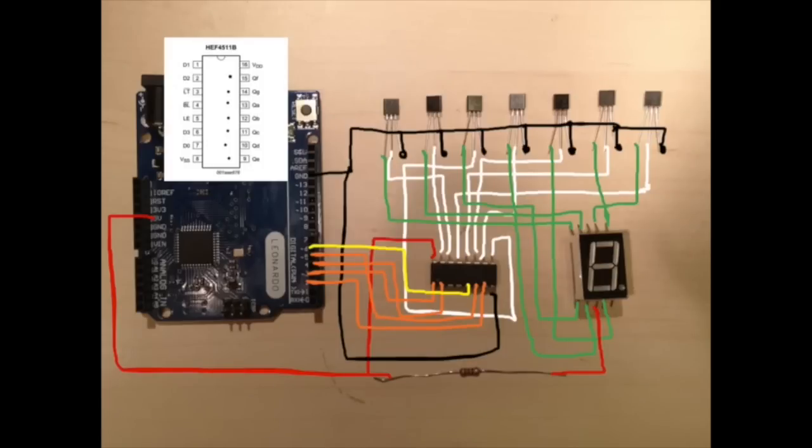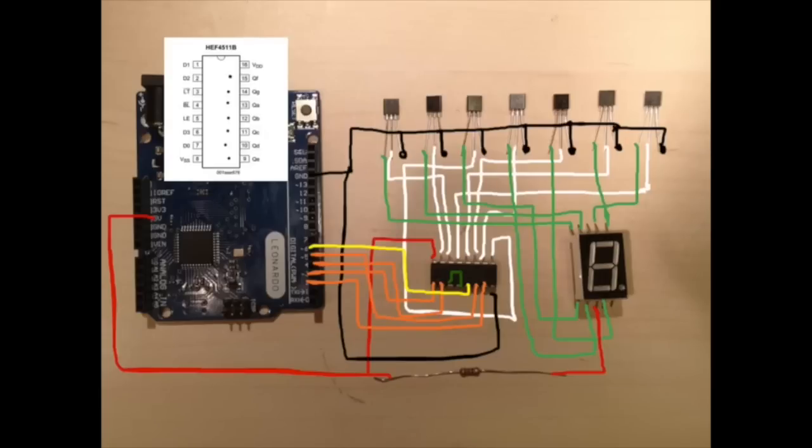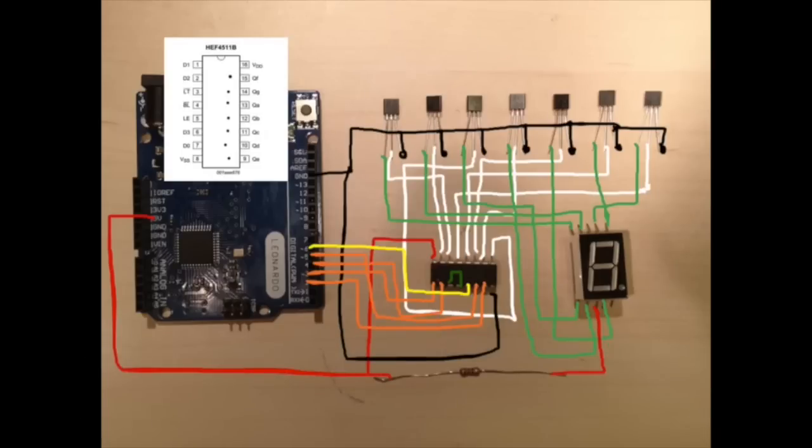One final thing, we are going to connect a cable between pin 3 and pin 4, LT and BL. By doing this, we are making sure that when the latch pin LE goes low, the Q pins always show the number represented by the four digital inputs.